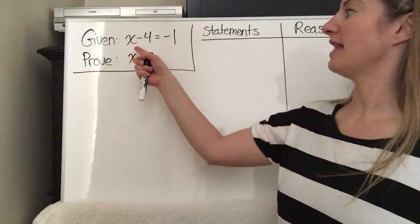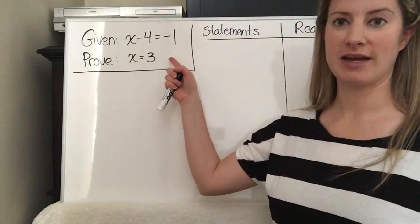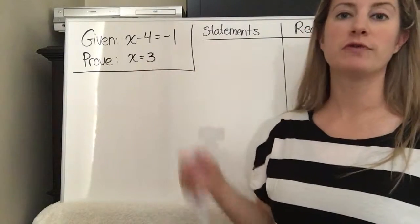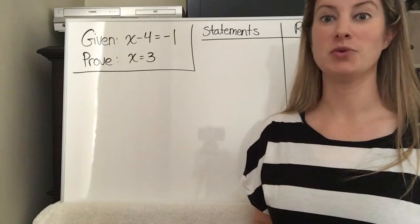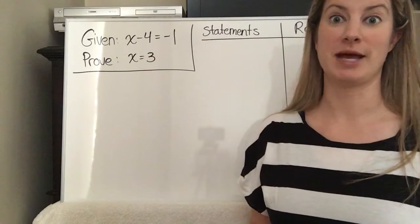So we are given that x minus 4 equals negative 1, and we want to prove that x equals 3. So the first thing you're going to do any time you do a two-column proof is you always write down the given as your first step.